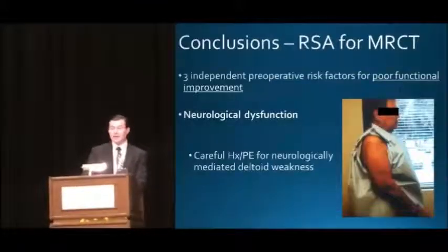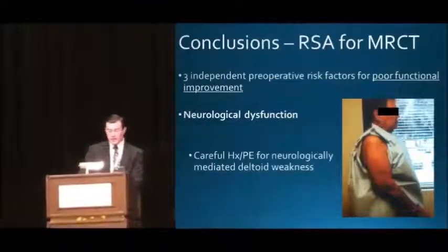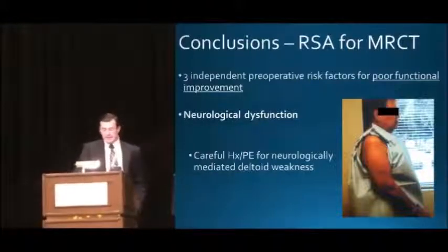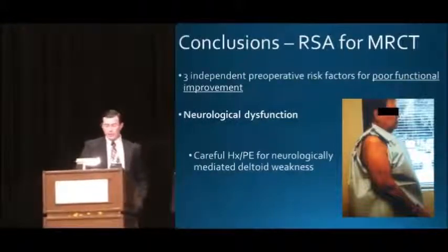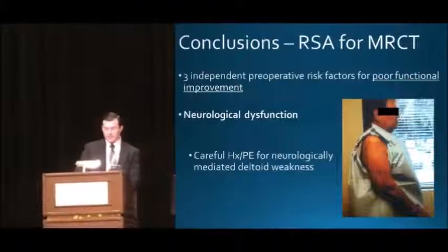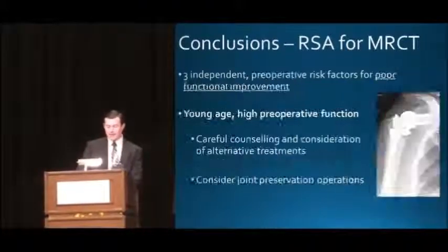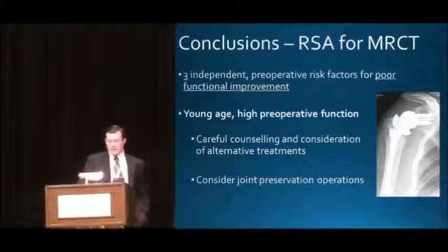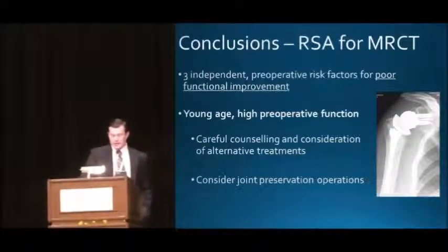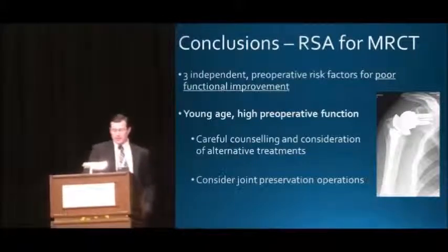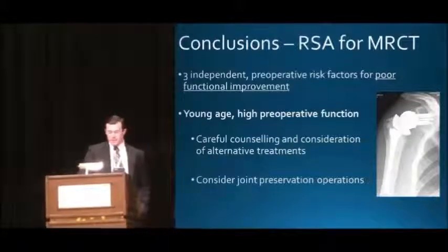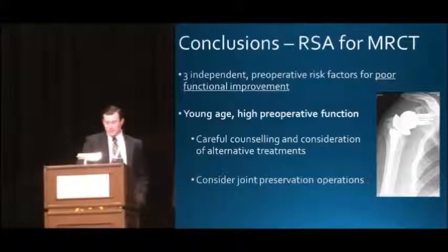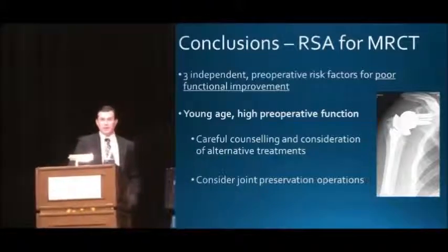We believe that this study has practical implications for the shoulder surgeon. First, it emphasizes the need for careful history and physical exam to seek out neurologically mediated deltoid weakness, which can be difficult. It also suggests that for younger and more highly functioning patients, care should be taken prior to offering a reverse. Careful counseling and consideration of alternative treatments are warranted for these patients. For certain of these, an attempted joint-preserving surgery should be considered prior to performing a reverse.